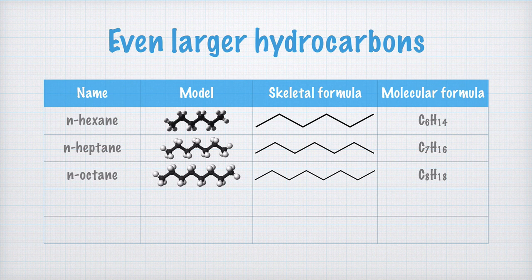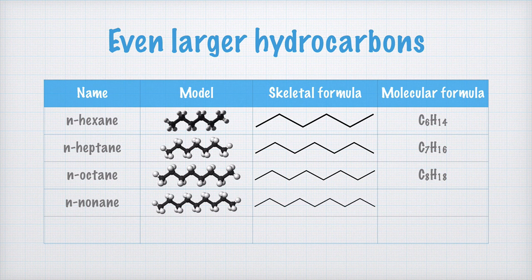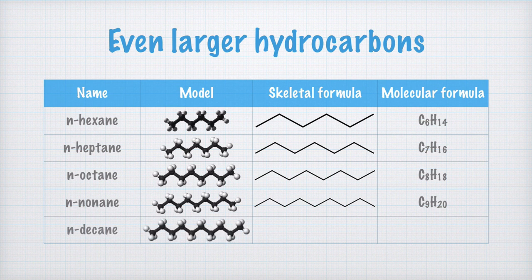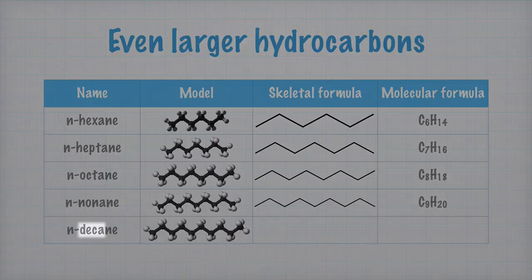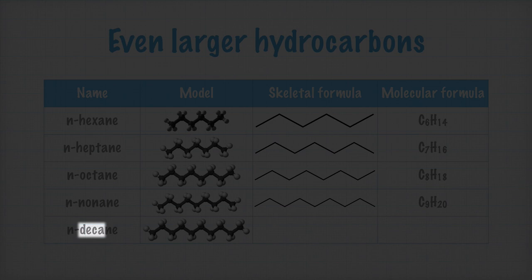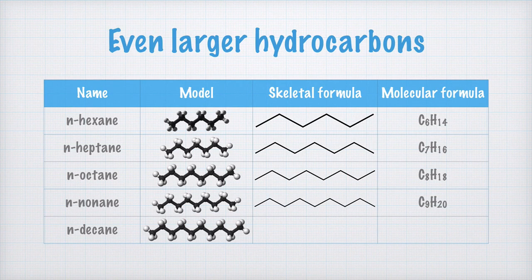Nine in Greek is nona, so the next hydrocarbon in our table is N-nonane with nine carbon atoms. We write the skeletal formula like this, and its molecular formula is C9H20. The last hydrocarbon in this table is N-decane. You may recognize the Greek word for ten here — the same as in, for example, a decade, which is ten years. The skeletal formula for decane looks like this, and its molecular formula is C10H22.